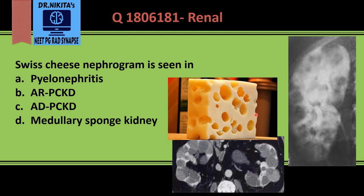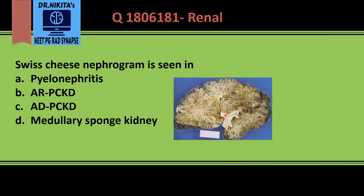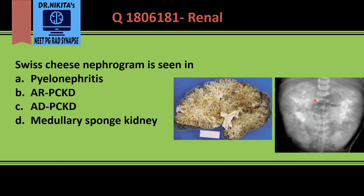Autosomal dominant polycystic kidney disease is the one which has large cysts, while in autosomal recessive there is basically ectasia of the collecting ducts. These collecting ducts are ectatic, and when we do an IVP or CT, contrast accumulates in them and gives a striated appearance — multiple striations in the kidney.